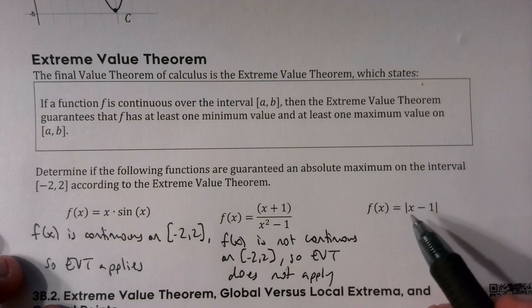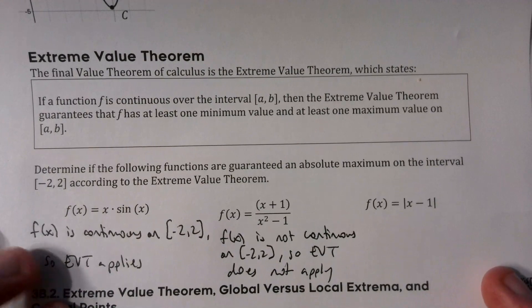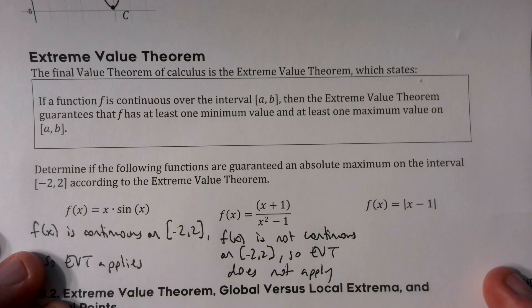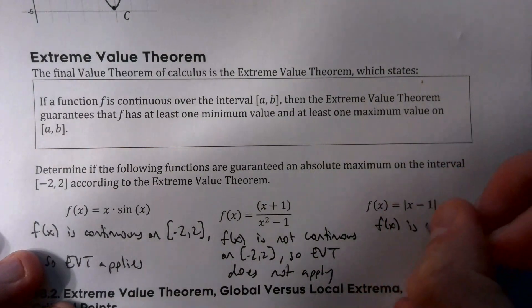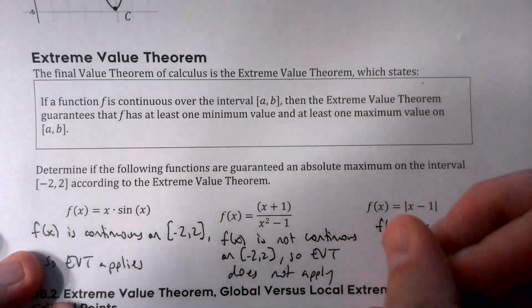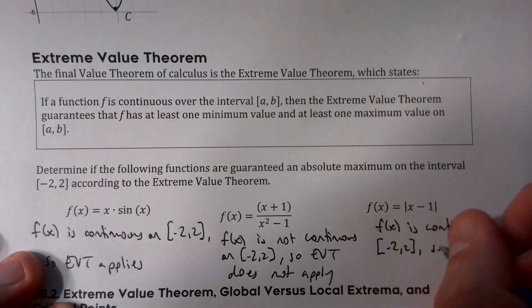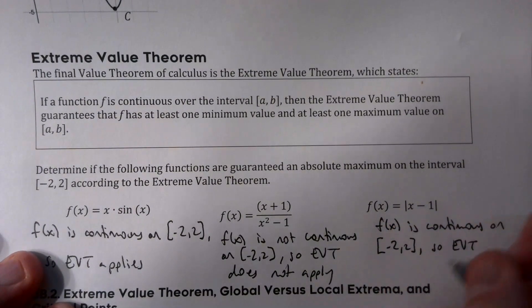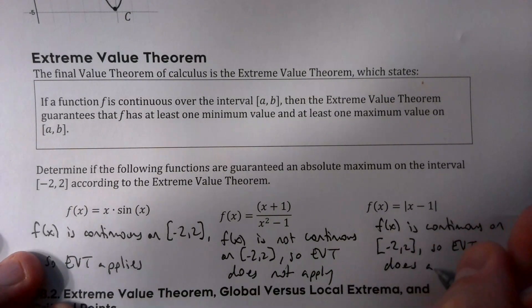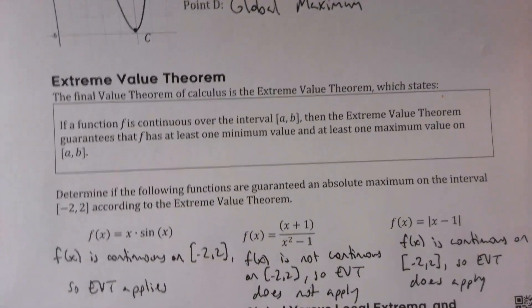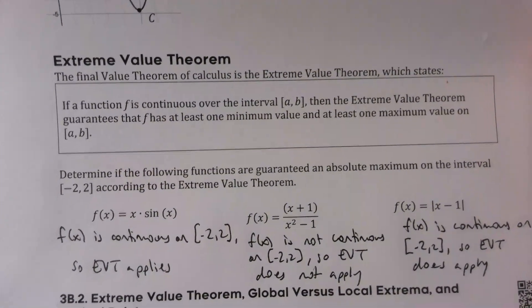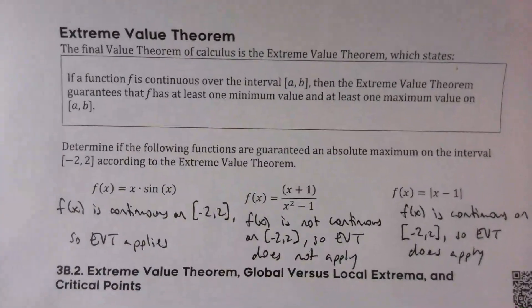For f(x) = |x−1|, as we saw with the mean value theorem, it's not differentiable at x = 1 due to the sharp corner, but it is continuous at x = 1. So it is continuous on the closed interval [−2, 2], and the extreme value theorem does apply. All that's required for the EVT to guarantee a minimum or maximum is that the function is continuous on the closed interval.